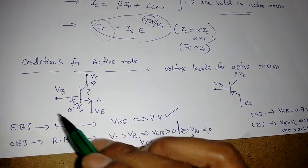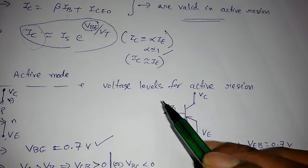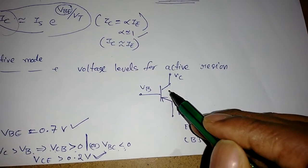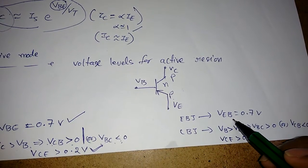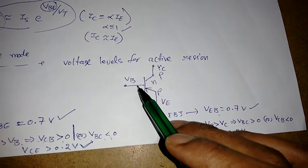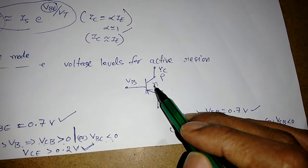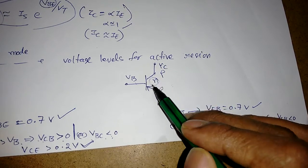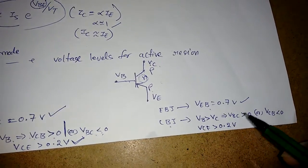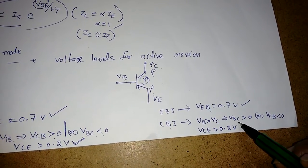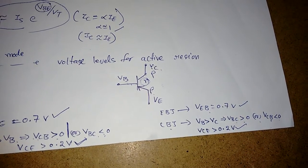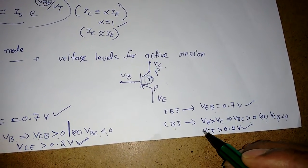For a PNP transistor, the emitter is P-type, so the emitter voltage should be greater than the base by 0.7 V. For the collector-base junction to be reverse biased, VC should be less than VB — since the base is N-type and needs more voltage than the collector — so VBC > 0, or equivalently VCB < 0.